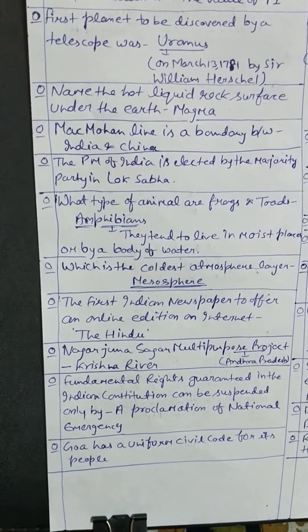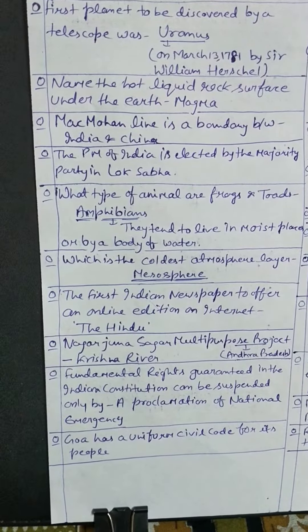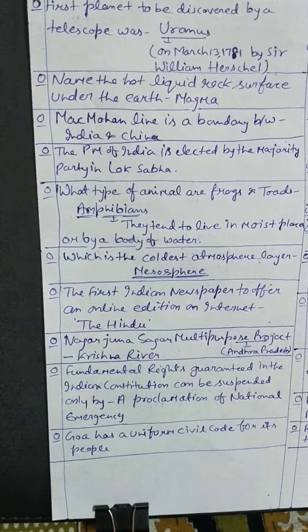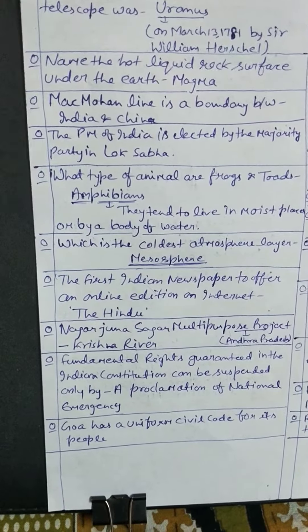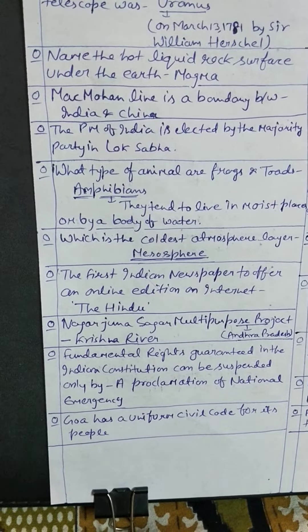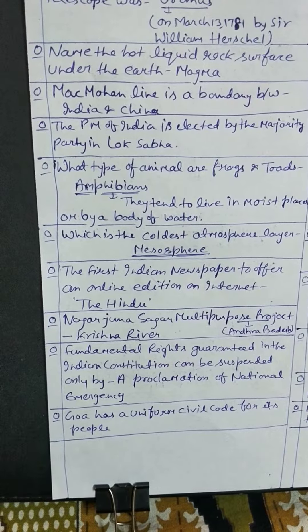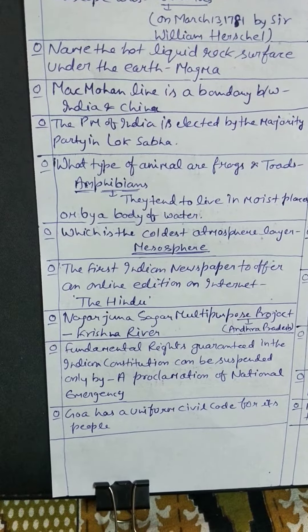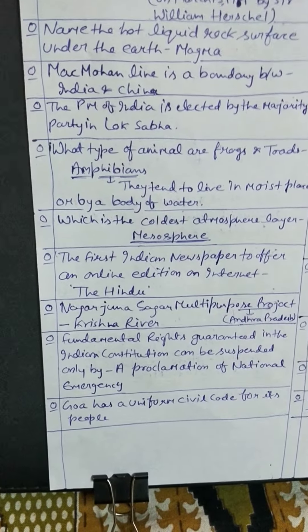The McMahon Line is the boundary between India and China. The Prime Minister of India is elected by the majority party in the Lok Sabha. Frogs and toads are amphibians — they tend to live in moist places or near a body of water.